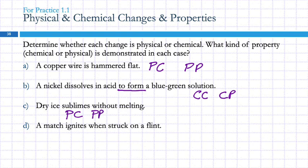A match ignites when struck on a flint — chemical. That's a chemical property. Physical change and physical property always go together. Chemical property and chemical change always go together.